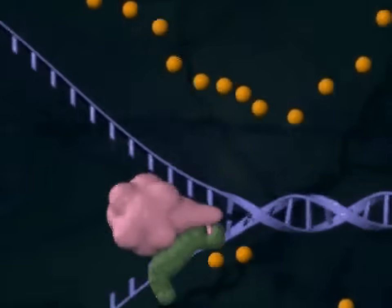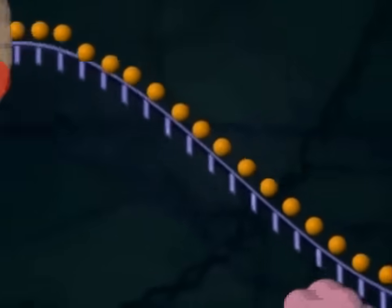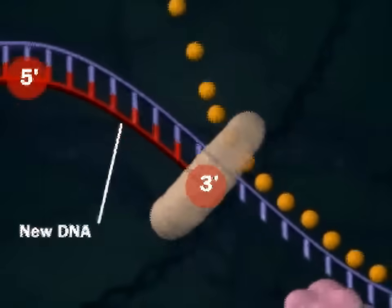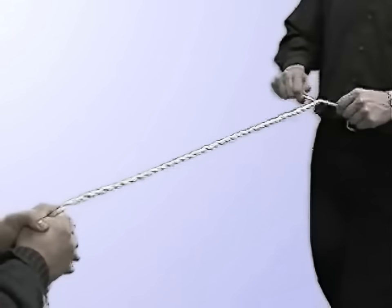Let's consider what happens as DNA unwinds during replication. As DNA unwinds, it acts like this rope when we pull apart its two strands.